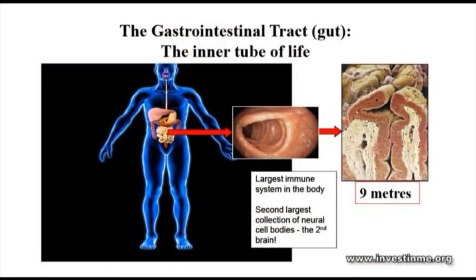50 to 70 grams of IgA per day are produced, and the vast majority is secreted into the gut lumen. The gut also contains the second largest numbers of neural cell bodies outside of the brain, so the gut could be considered your second brain. When somebody says they're thinking with their gut, they're probably not too far off.